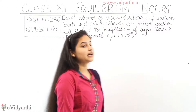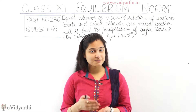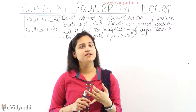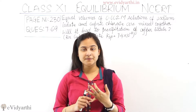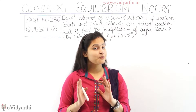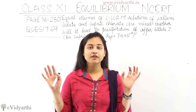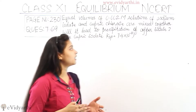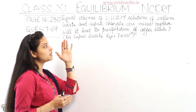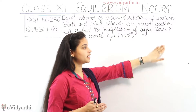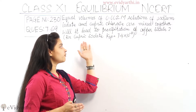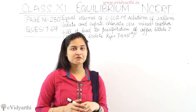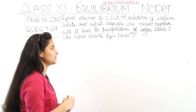What we are given is that sodium iodate and cupric chlorate both have a concentration of 0.002 molar. These two solutions have the same concentration and we have mixed them together. We have been asked: will it lead to the precipitation of copper iodate? The cupric iodate solubility product is 7.4 × 10⁻⁸. Let's start the solution.